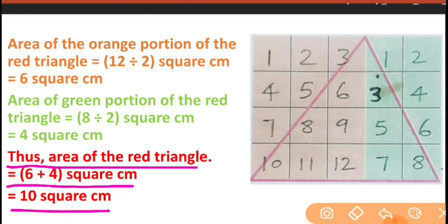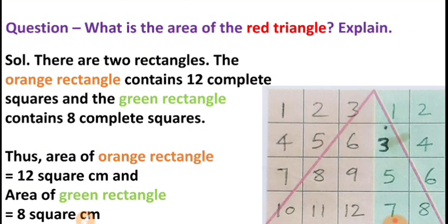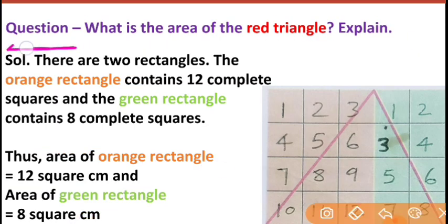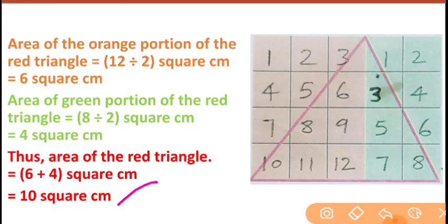The area of the red triangle is 6 plus 4 square centimeters, which equals 10 square centimeters. So this is surprising — the red triangle area is 10 square centimeters and the blue triangle is also 10 square centimeters. This means the girl was correct! Note down this answer from here up to here, and draw the shape also.